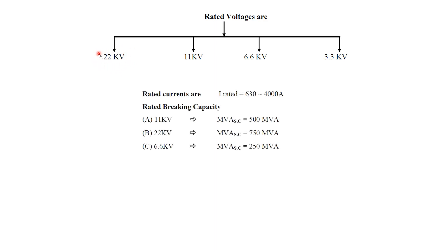At the medium voltage level, the rated currents of available circuit breakers typically range from 630 amperes to 4000 amperes.